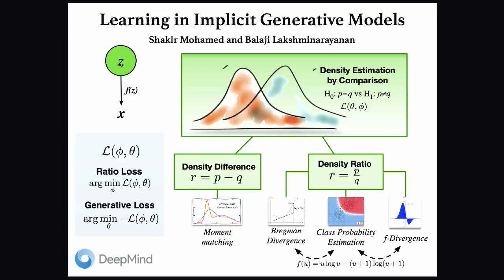There are four ways of dealing with this problem of density estimation by comparison or hypothesis testing. One way mentioned today is the density difference approach, where you compute this quantity R. This is what Arthur spoke about earlier, and there are many different ways of doing this — in classical statistics, the generalized method of moments, simulated method of moments, or as Arthur discussed, using maximum mean discrepancy, or some newer areas like optimal transport.